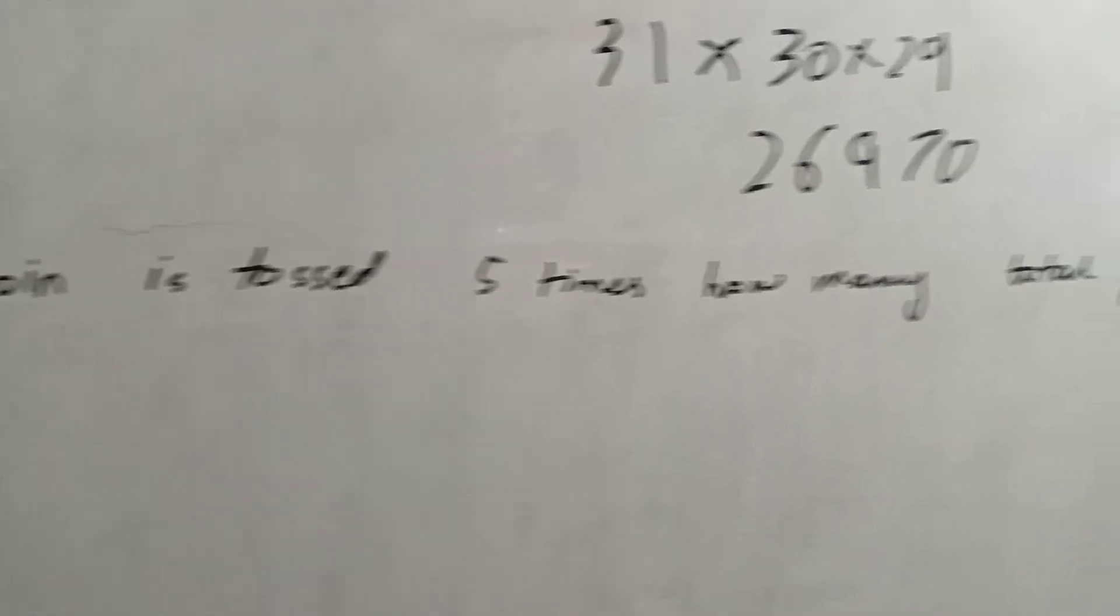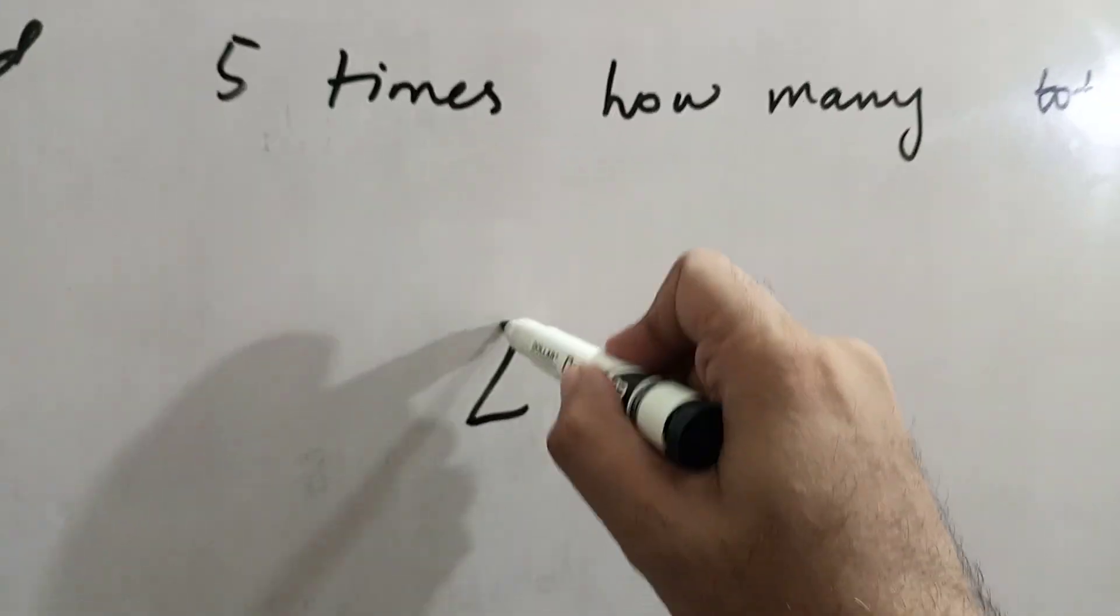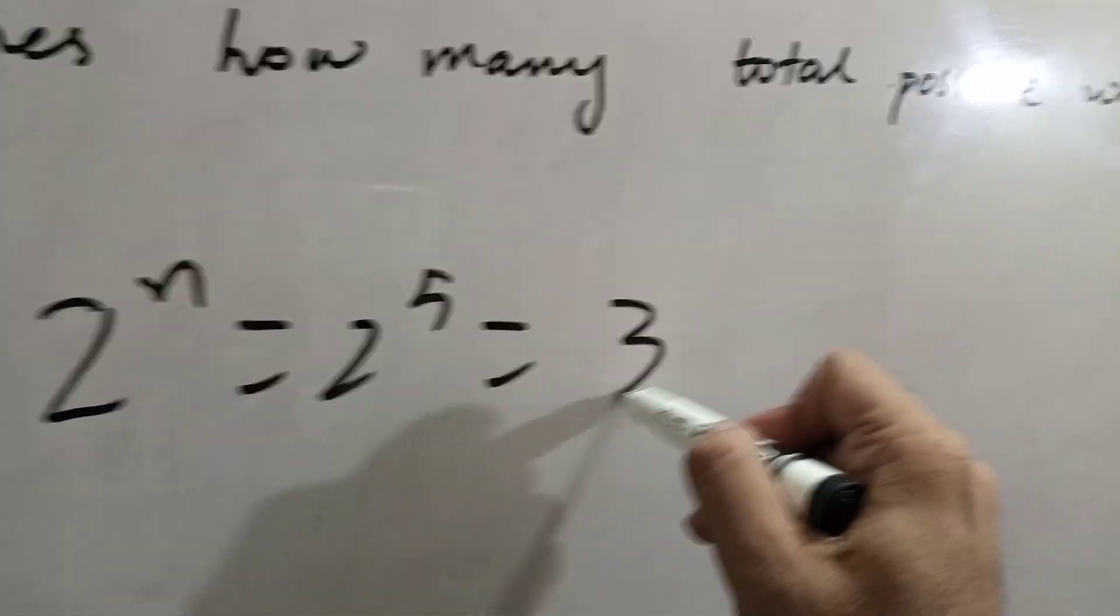The coin is tossed 5 times. How many total possible ways? So, the formula is 2 to the power n. If n is 5, then it's 2 to the power 5. It's 32.